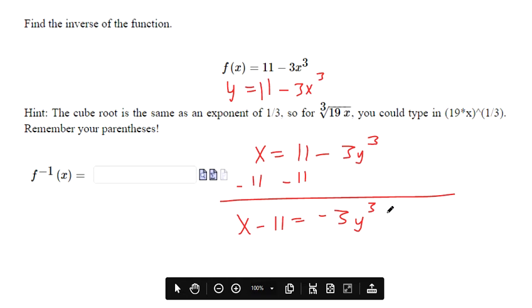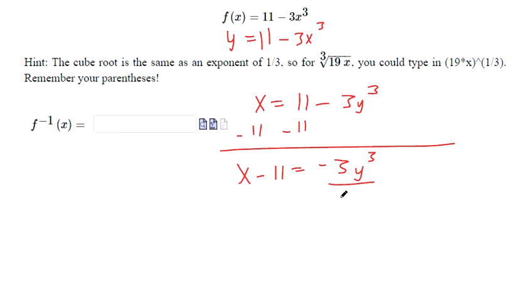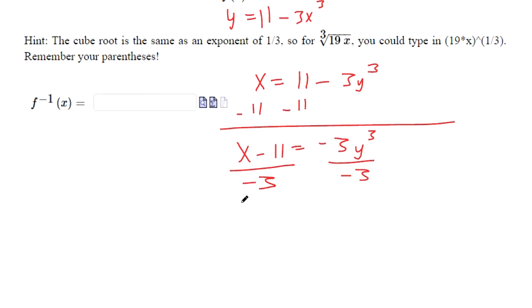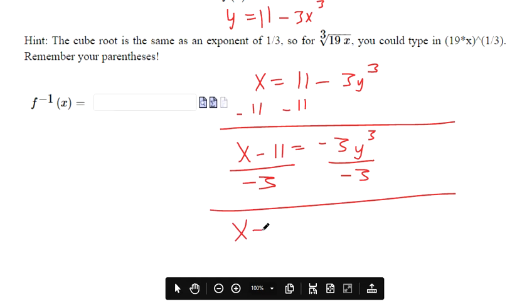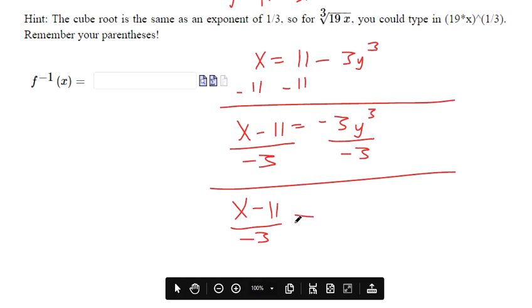And then I still want to get y by itself, so I'm going to divide both sides by that negative 3. Don't try to get the exponent. Don't try to get rid of that 3 in the exponent position right off the bat. You want that to be the last thing you do. So divide negative 3 from both sides, so you get x minus 11 over negative 3. There's other ways to phrase that. That equals y to the third power.